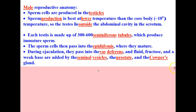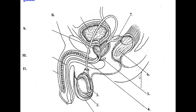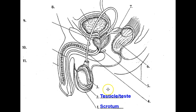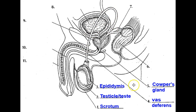Let's take a look at the male reproductive anatomy diagram. We're going to go in numerical order. Number one is the scrotum, the sac which houses the testicles. Number two is the epididymis, which we mentioned — that's where sperm matures. The vas deferens is the tube. Number five is the Cowper's gland, one of the glands that secretes fluid to mix with the sperm.